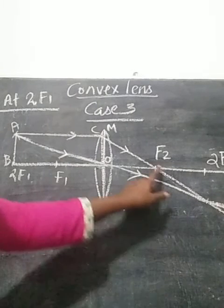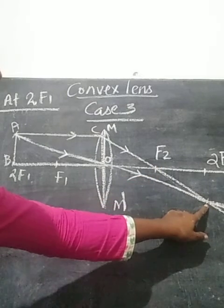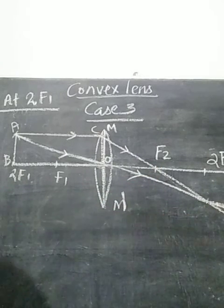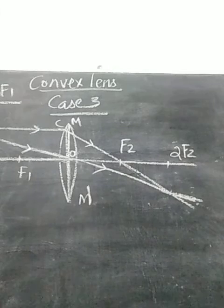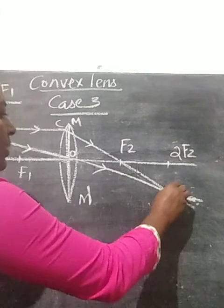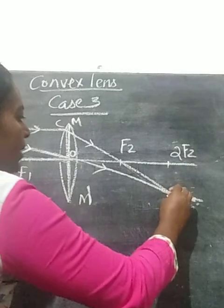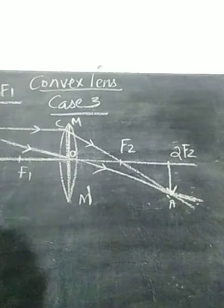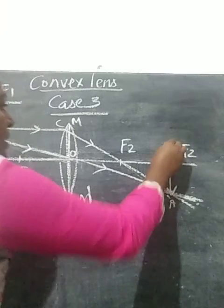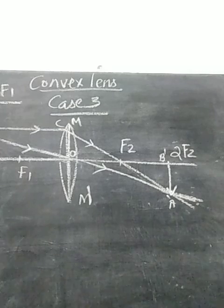This is the second refracted ray. See where the two refracted rays are meeting. This is the point where they meet, down to the principal axis. We mark it as A'. To get the complete image, we draw a perpendicular from A' to B' on the principal axis. So A'B' is the image formed.